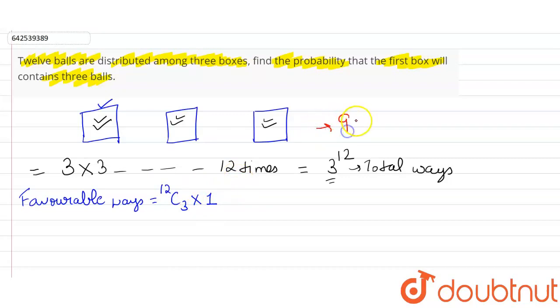And the remaining 9 balls will go in these 2 boxes. So from these 2 boxes, these 9 balls, first ball can go in this box or in this box. Similarly, all the 9 balls have 2 possibilities.